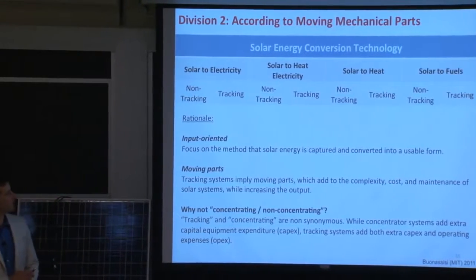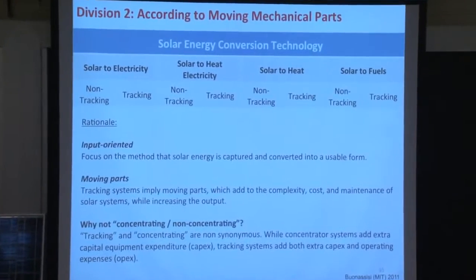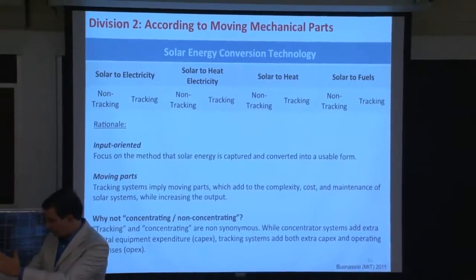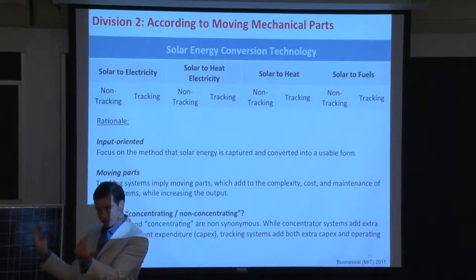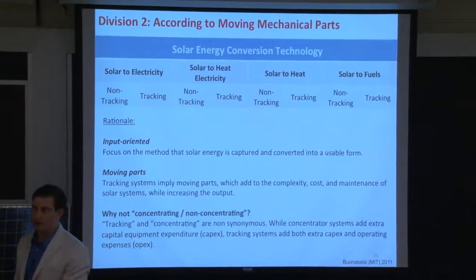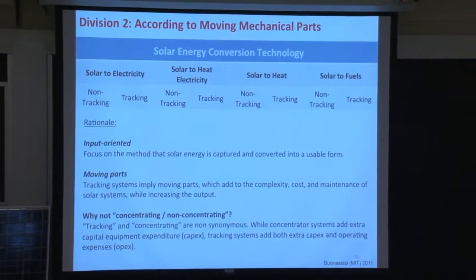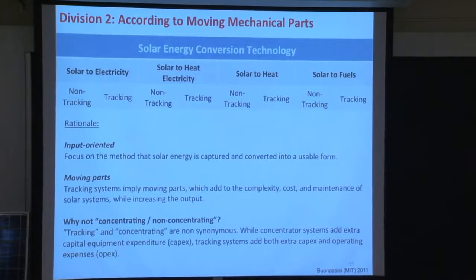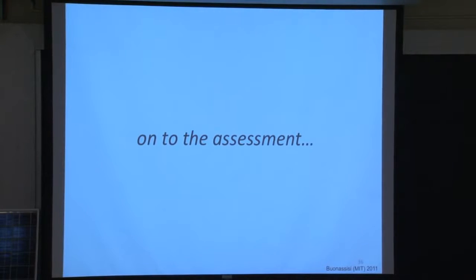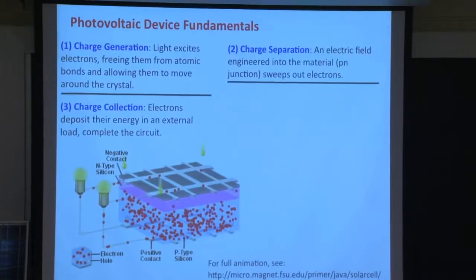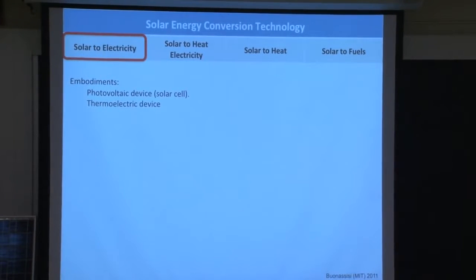We chose an output-oriented rationale for dividing the solar energy conversion space. The output would be either electricity, heat (which is then used to power a turbine to generate electricity), or fuels. Those are the four primary outputs of solar energy today. We then do a further subdivision between non-tracking and tracking. Tracking means your apparatus follows the sun as it moves through the sky over the course of the day to maximize the cross-section between incoming rays and your device. The reason we chose this division is because tracking requires motors, which add cost and reliability questions to your system.